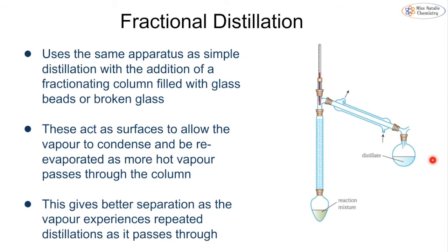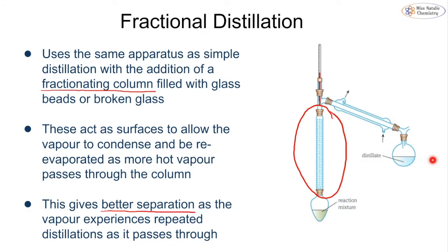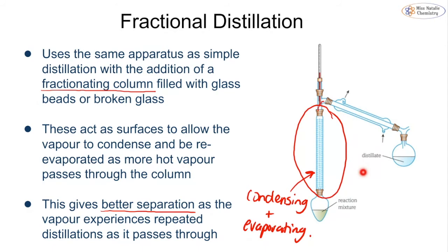Fractional distillation can also be done in the laboratory on a much smaller scale. It is very similar to simple distillation but with the addition of a fractionating column filled with glass beads or broken glass. These act as surfaces for vapor to condense and re-evaporate as more hot vapor passes through, allowing for better separation through constant condensing and evaporation within the column. By the time the vapors reach the condenser they pass through and are collected in the receiving flask.